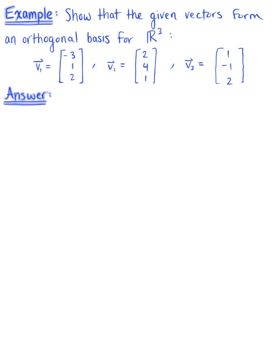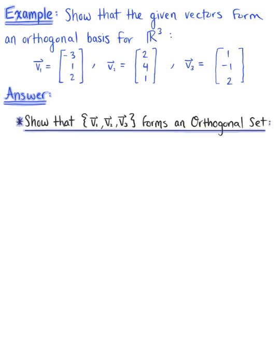The first thing that we need to do here is show that the set of vectors V₁, V₂, V₃ forms an orthogonal set. In other words, we need to show that all pairs of distinct vectors in this set are orthogonal to each other. We have our three cases.